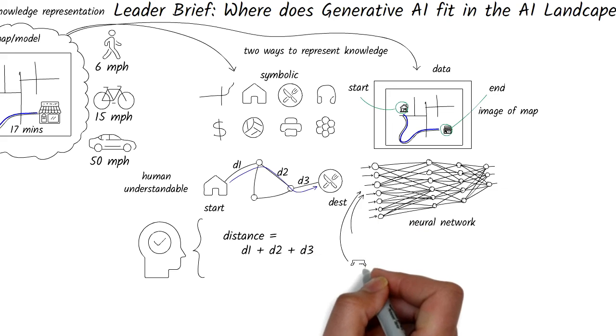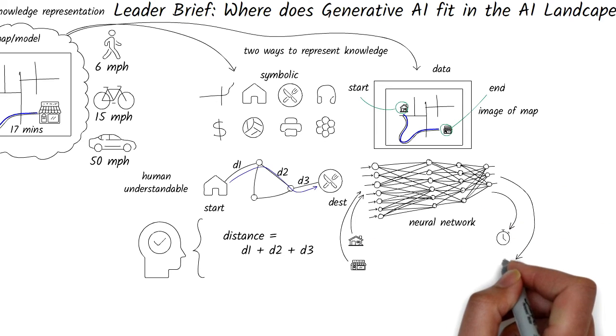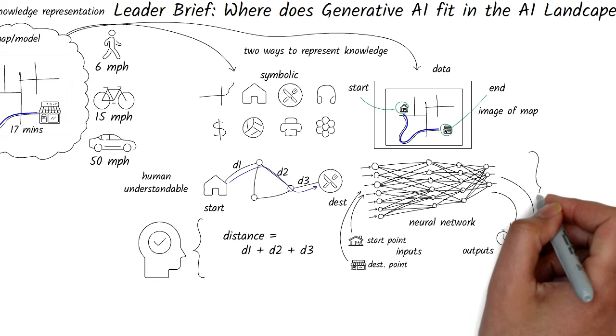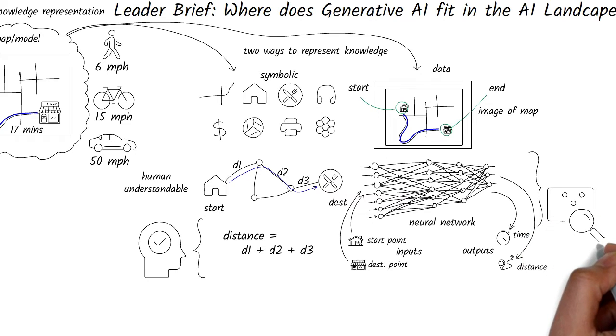Now, to find the travel time between your home and the restaurant, you feed the two points on the map and the mode of transportation. The computer will give you the travel distance and time. With images as input, you don't exactly know how the computer represented the knowledge in a neural network. This is still a field of research.